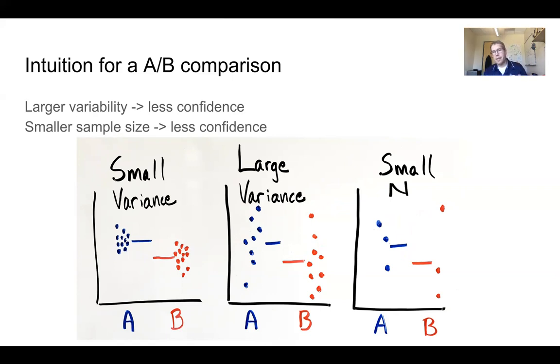So this panel here shows you a couple of related concepts, the variability inherent in a data set, the difference between two groups, and the number of samples that you collect or the number of replicates that you collect. All of these concepts are related to statistical power.